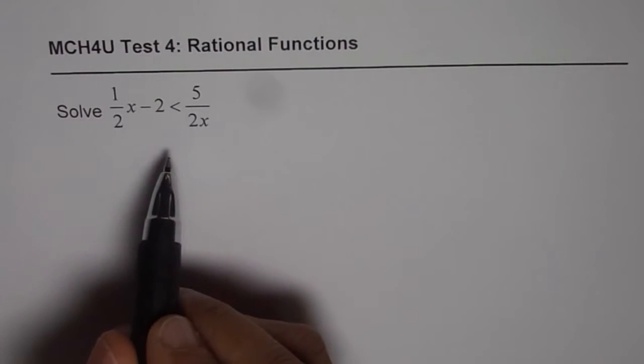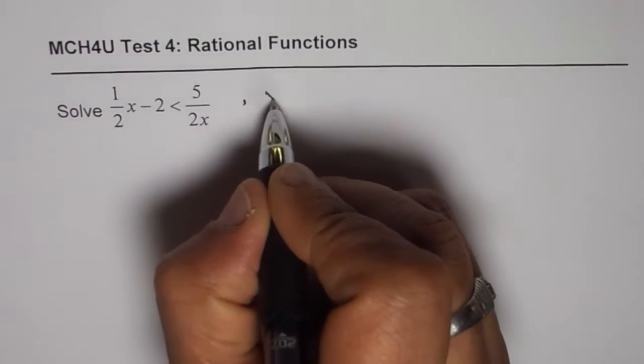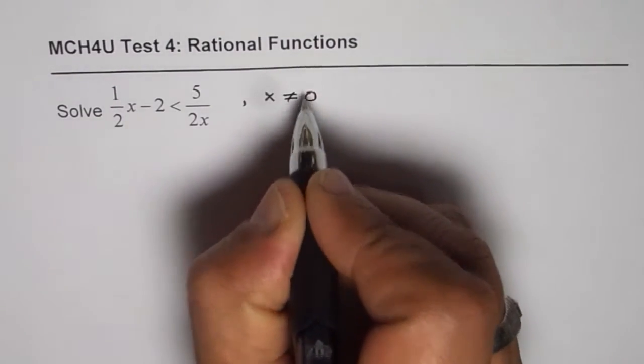To solve any rational inequality, we should begin by writing down the restrictions. And the restriction here is that x is not equal to 0.